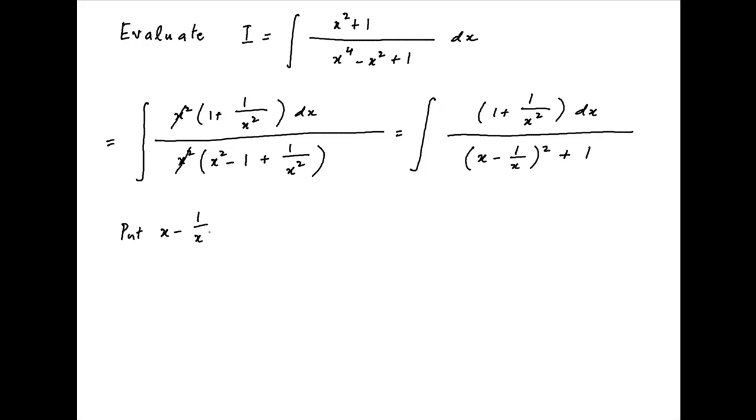Now put x minus 1 upon x equal to t. Taking the derivative of both sides, (1 plus 1 upon x-square) times dx is equal to dt. Note that the left-hand side is equal to the numerator of the integrand of I.